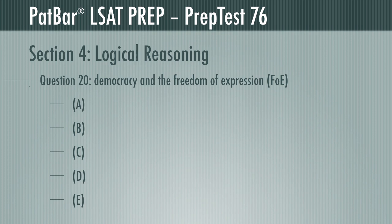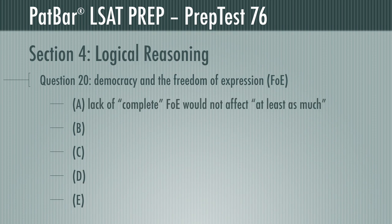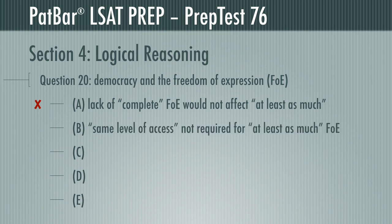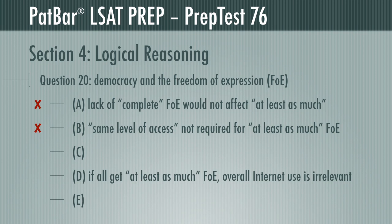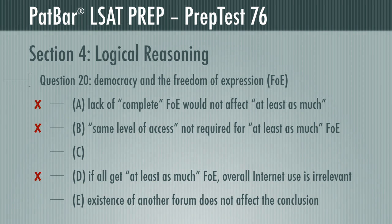The required assumption destroys the conclusion if it were not true. For example, if people didn't have complete freedom of expression, it doesn't harm any argument for at least as much. What if all citizens don't have the same level of access? It doesn't hurt the argument, since enough access to guarantee at least as much freedom of expression is all that is required. D makes absolutely no difference—even if 99% of Internet use was frivolous, as long as the other 1% gave everyone with important issues to discuss at least as much freedom to do so, the conclusion holds. What if some other forum still available is an important tool of democracy? Does that hurt the conclusion that Internet users should get at least as much freedom of expression? The answer is no.